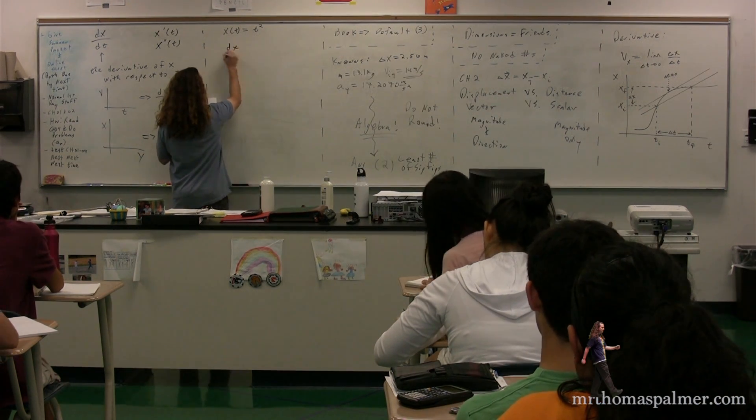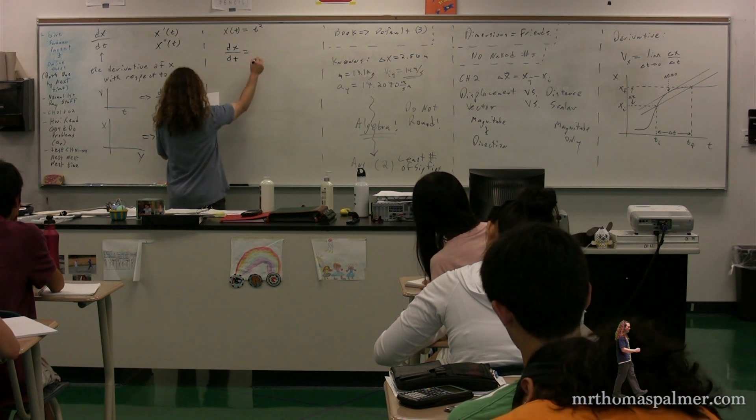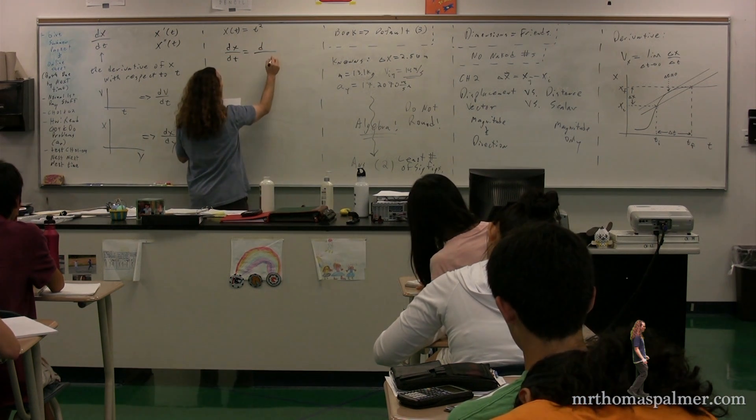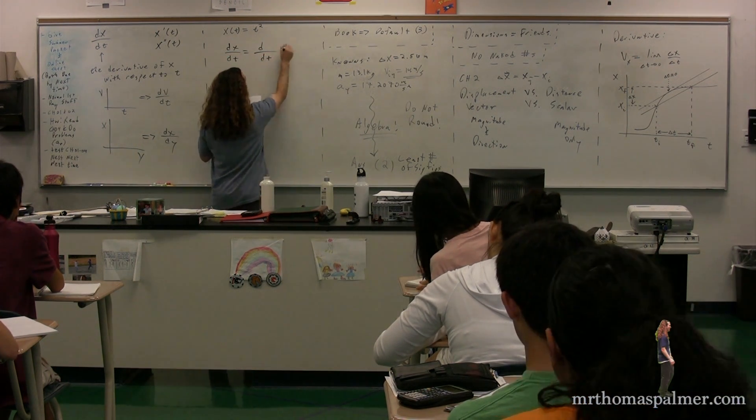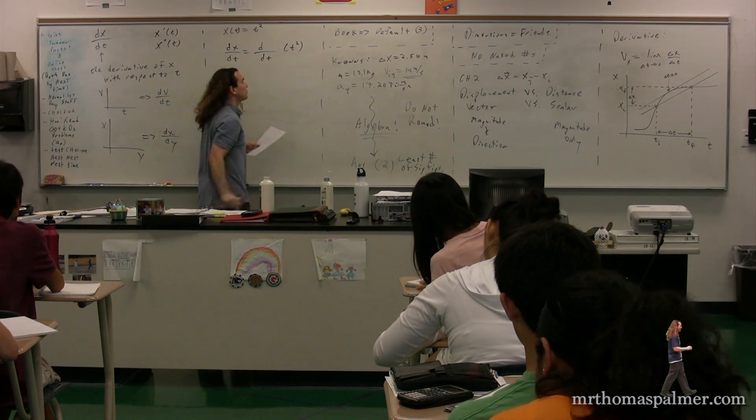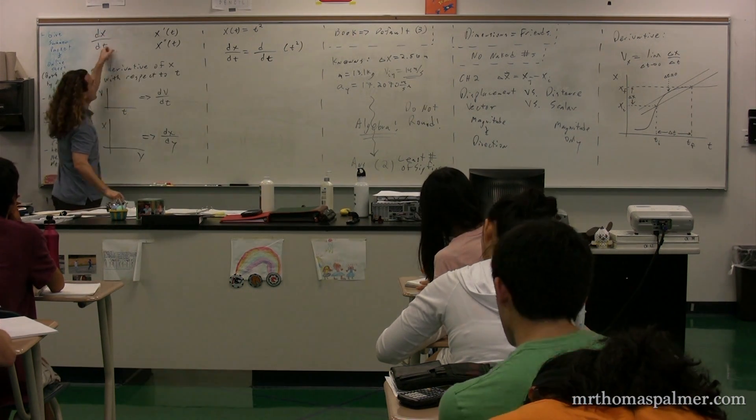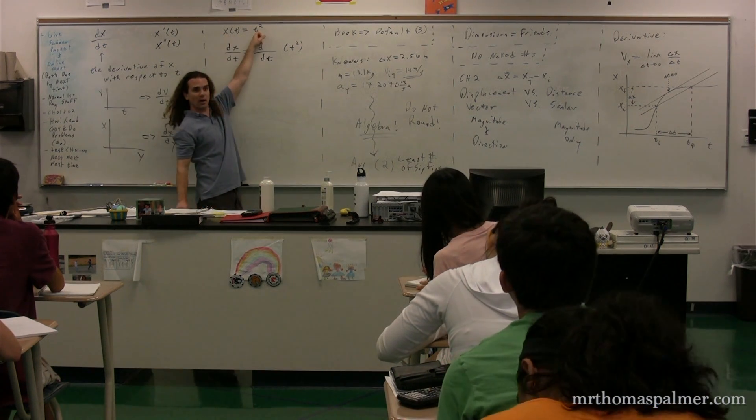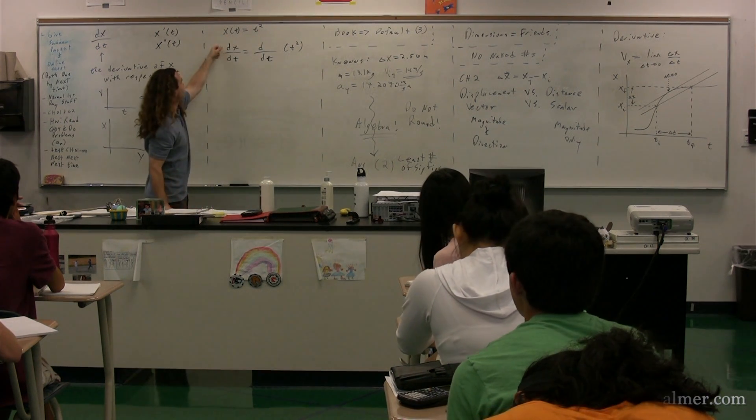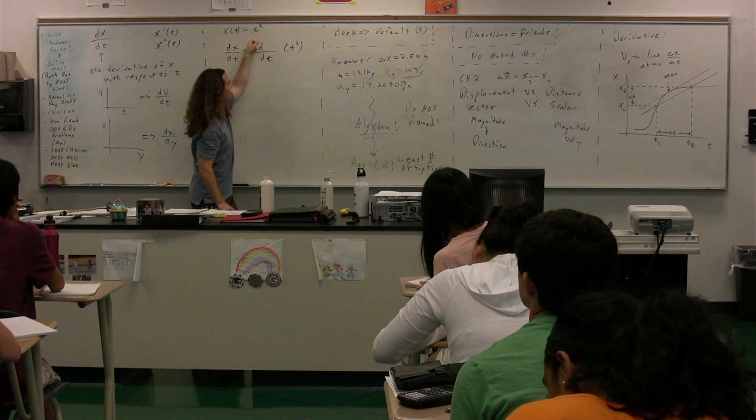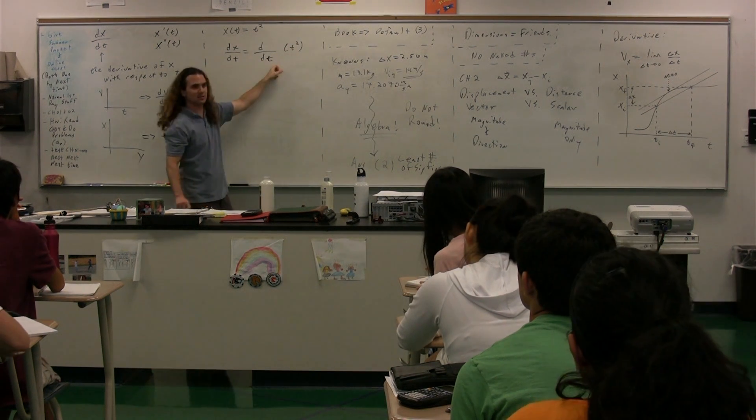So the derivative of x with respect to time, in other words, the derivative of time squared with respect to time. So that's what that means, right? The derivative of x with respect to time, well, x, the function, is equal to t squared.